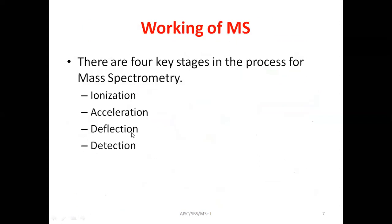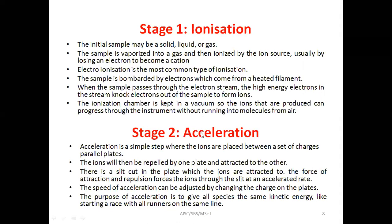The working of mass spectrometry involves four key steps: ionization, acceleration, deflection, and detection. In the first step — ionization — the initial sample may be solid, liquid, or gaseous. The sample is vaporized into a gas and then ionized by the ion source, usually losing an electron to become a cation. Ionization of the compound takes place by loss of one electron, giving the molecule a positive charge and forming the molecular ion.